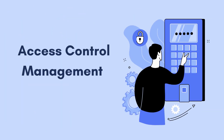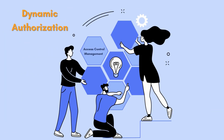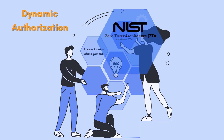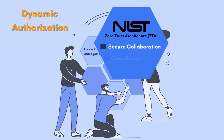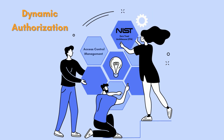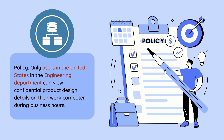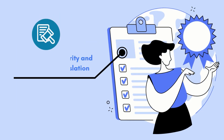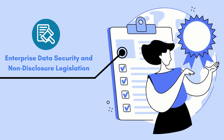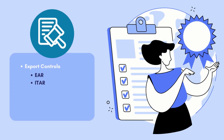In addition to access control management, dynamic authorization is also a core pillar of the NIST zero trust architecture (ZTA), with capabilities to achieve secure collaboration while staying in compliance. By enabling organizations to create robust data segregation rules, it helps meet the requirements of tough enterprise data security and non-disclosure legislation, such as export controls and the General Data Protection Regulation (GDPR).